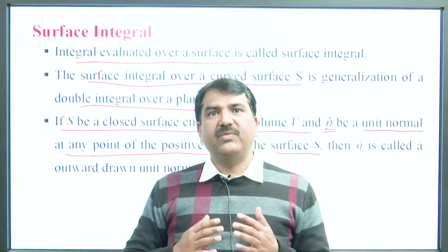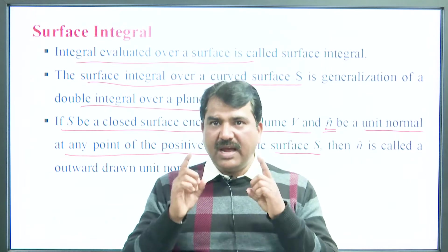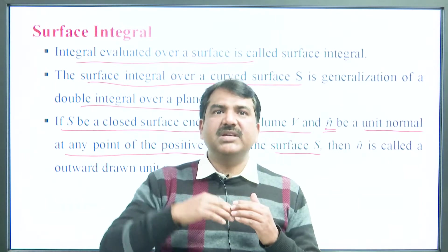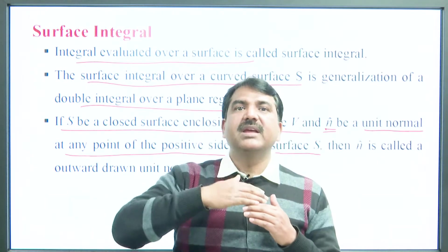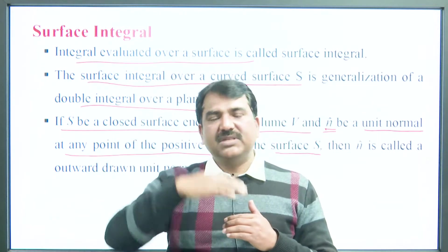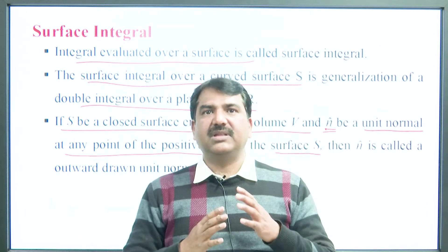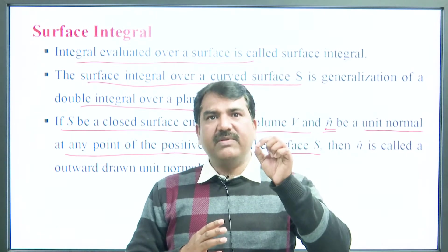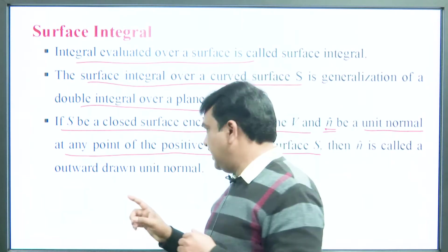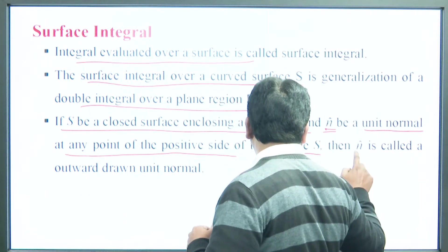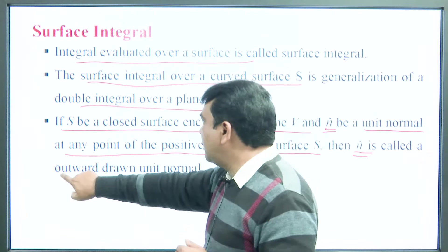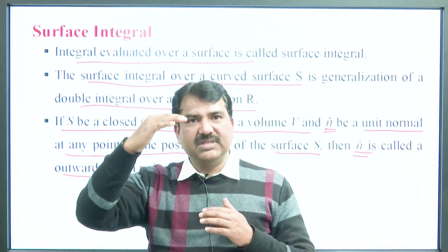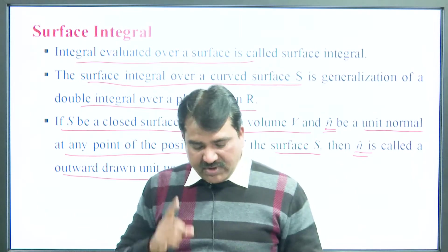Throughout the integral, we take N as the outward drawn unit normal — that is, the unit normal vector in the positive direction of the surface.